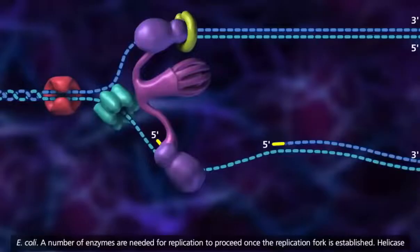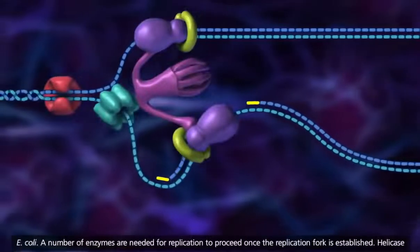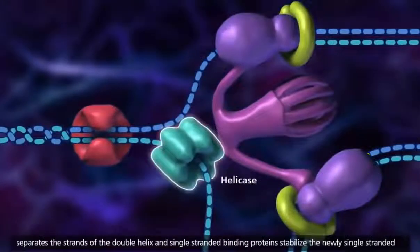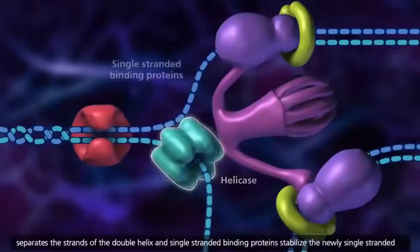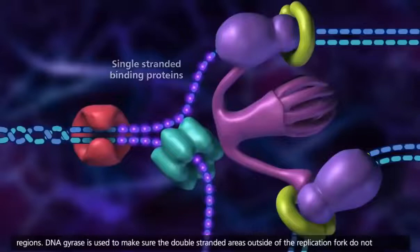A number of enzymes are needed for replication to proceed once the replication fork is established. Helicase separates the strands of the double helix, and single-stranded binding proteins stabilize the newly single-stranded regions.